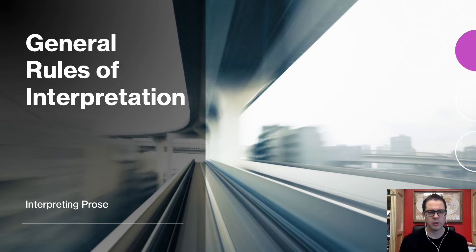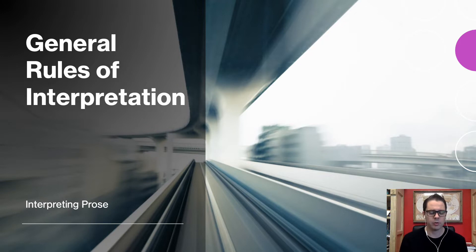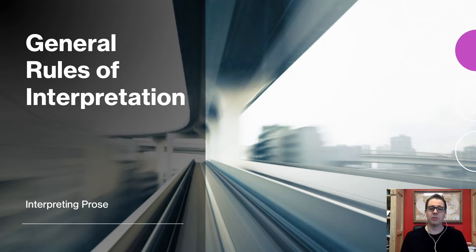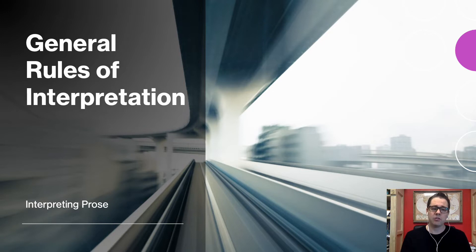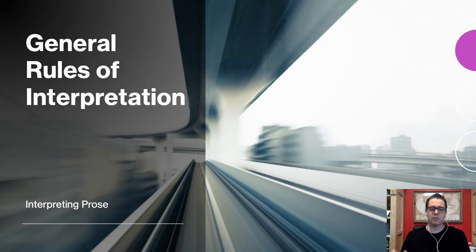Hey everyone and welcome back to Heritage University. As we continue through this course, we've gone through several different lessons that have talked about the theory of interpretation — the role of the interpreter, the assumptions and presuppositions we bring to the text. We've talked a lot about the way that we read in general, but we're going to take a turn. We're going to be talking about some general rules of interpretation that we can apply to specific texts.